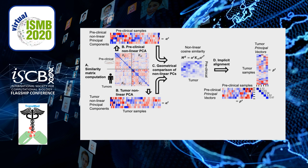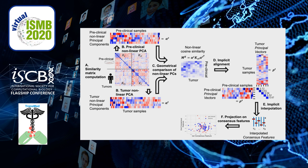However, the similarity is not perfect — each pair of vectors is correlated but not quite identical. So in order to select one single vector, we perform interpolation: within each pair, we draw an arc between the preclinical and the tumor principal vectors, and we select one vector in between that best balances the effect of preclinical and tumor signal. This is what we call the consensus features. We then use these consensus features to project both preclinical and tumor data, and we train a drug response predictor on the preclinical data and apply it on the tumor.